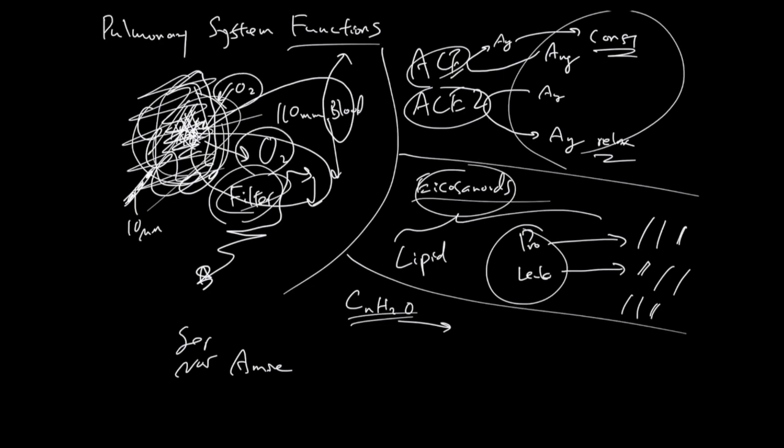In summary, lung does lots of gas exchange, but also serves as an important filter of the body. ACE1 and ACE2 found in the lung do angiotensin metabolism, making angiotensin that favors constriction and angiotensin that favors relaxing.